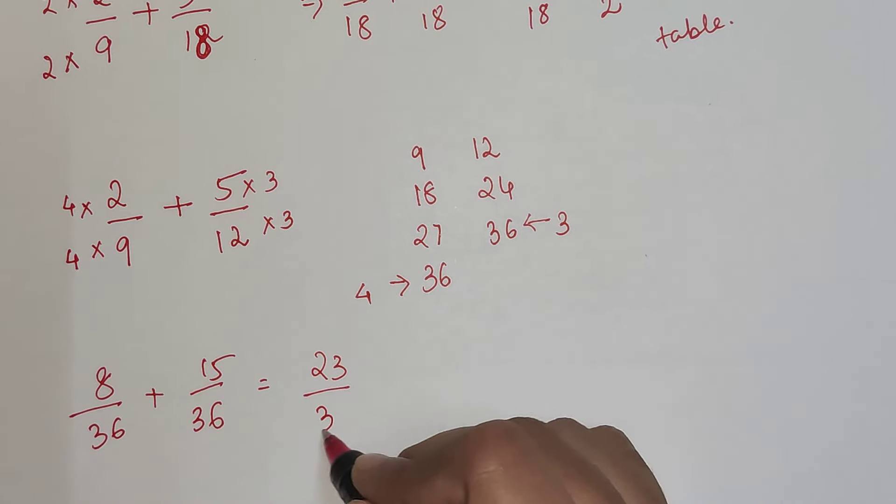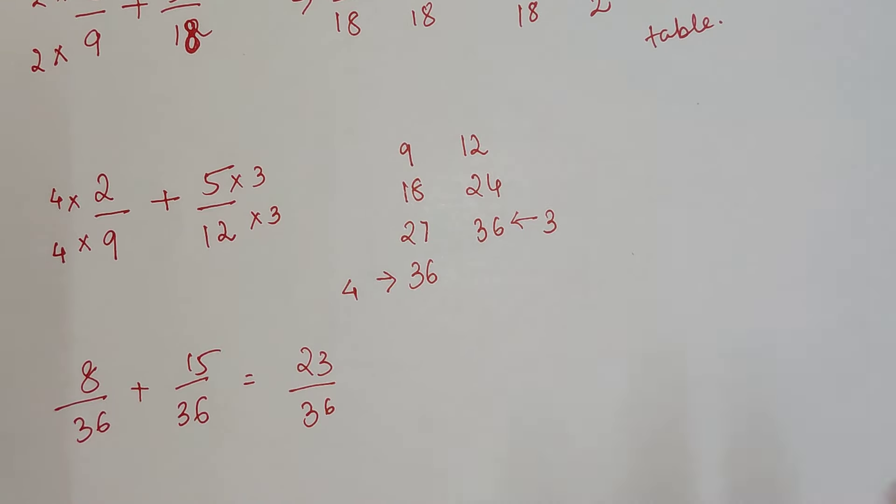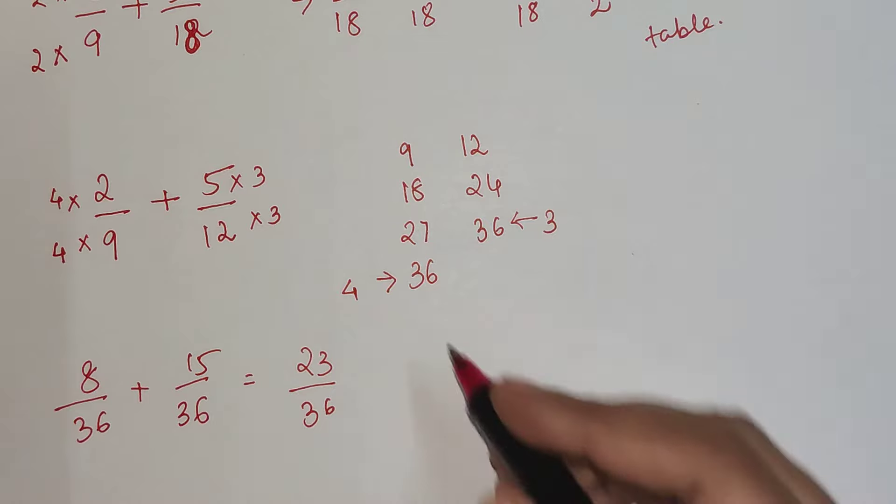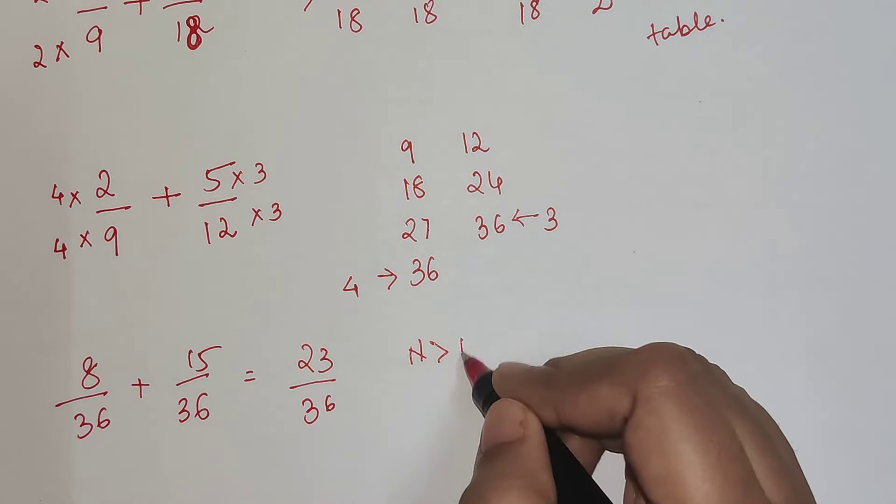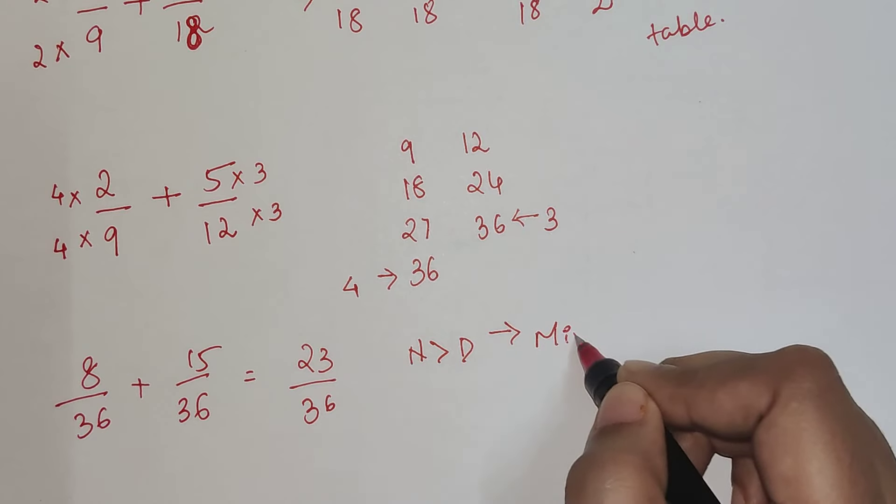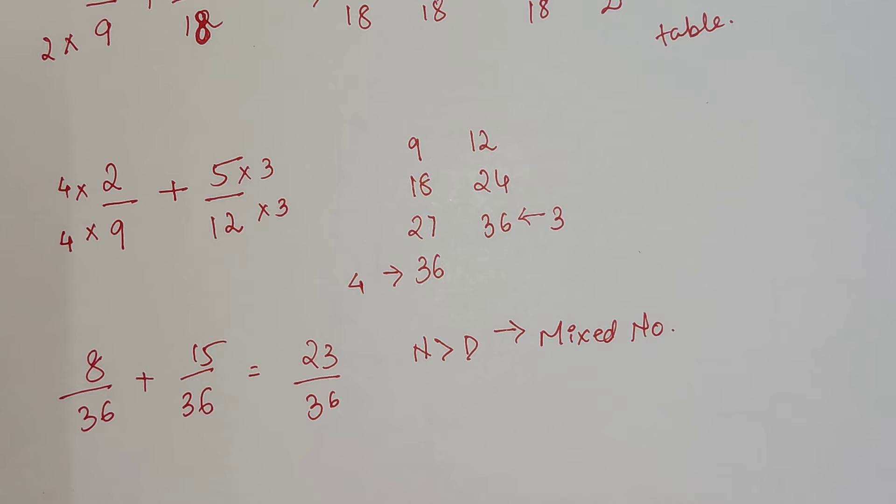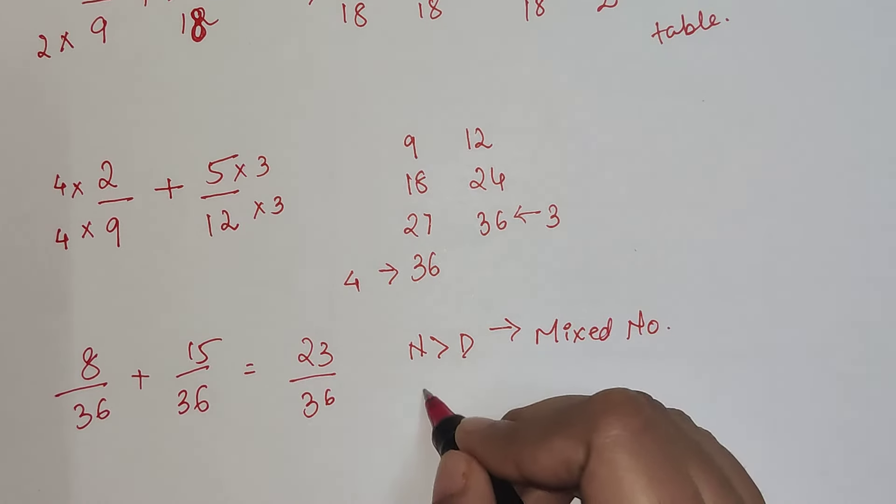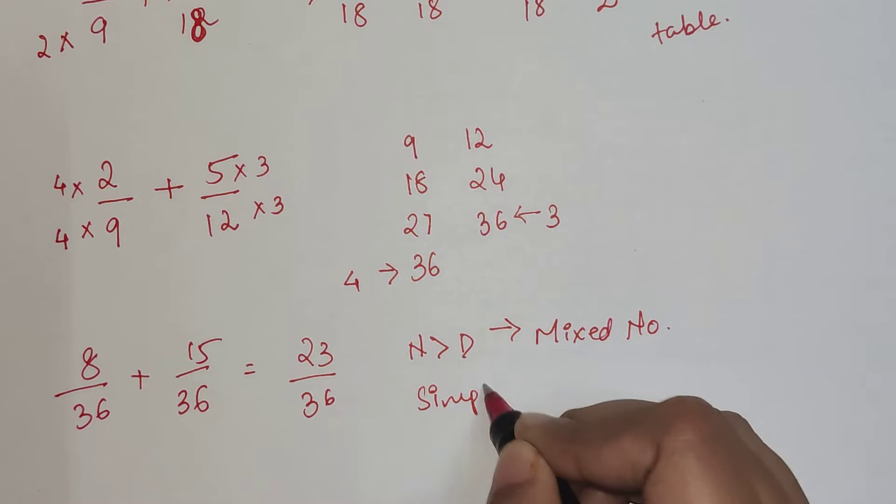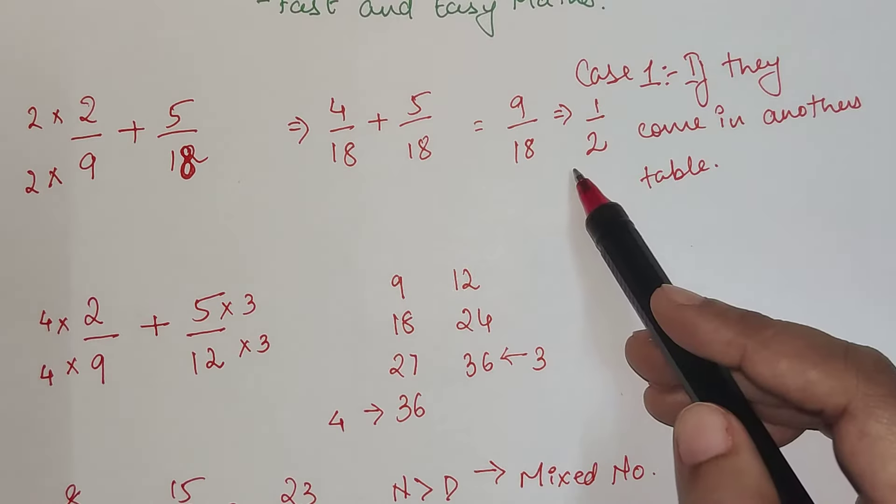So I'm getting 23 upon 36. Please understand, after adding, if your answer is coming out with the numerator bigger than the denominator, then you convert them into a mixed number because that is the practice which all math teachers would want you to follow.